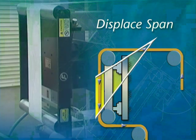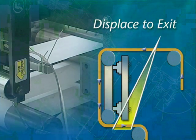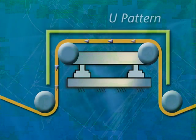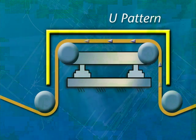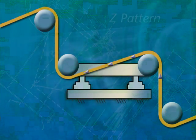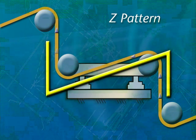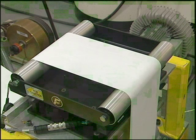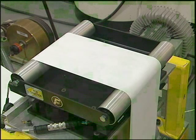Typically, each of the three spans — entry to displace span, displace span, and displace to exit span — should be greater than one width of the web. Displacement guides are typically used in a twist-displace-twist configuration. The twist can occur within a U-pattern, which sends the material back the way it came, or in a Z-pattern, in which the material continues in the same direction that it was traveling before displacement. Displacement guides are considered simple and relatively trouble-free ways to control position within your web.